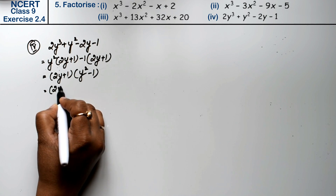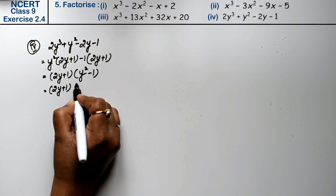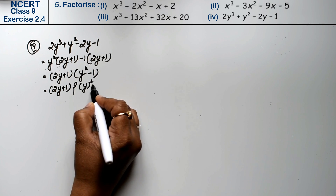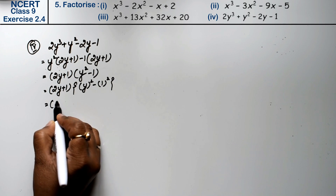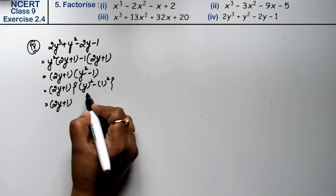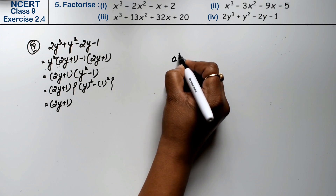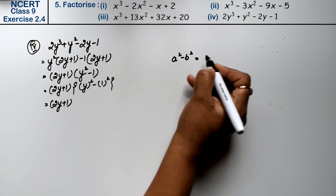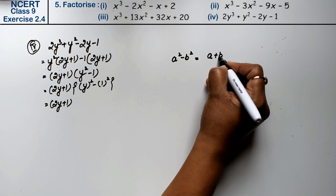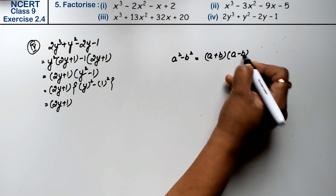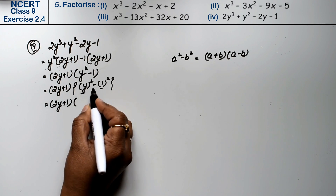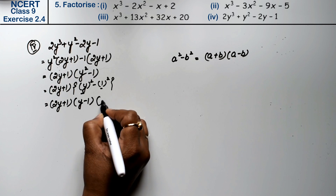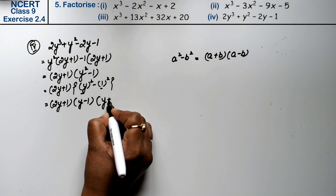Taking 2y plus 1 common, what remains inside is y squared minus 1. Now y squared minus 1 can be written as y squared minus 1 squared. Using the formula a squared minus b squared equals a plus b times a minus b, where a is y and b is 1, we get y plus 1 times y minus 1. So the final answer is 2y plus 1 times y plus 1 times y minus 1.